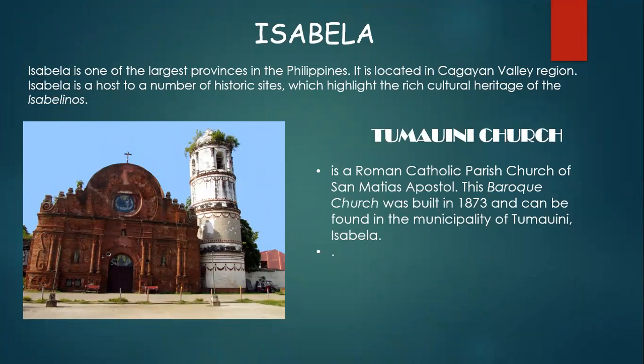In Isabela, as one of the largest provinces in the Philippines, we can find the Tumauini Church. Tumauini Church is a Roman Catholic parish church of San Matthias Apostol. This Baroque church was built in 1873 and can be found in the municipality of Tumauini, Isabela. The structure was built entirely of red bricks and done in the style of late Baroque or early Rococo. It has a four-story bell tower that looks like a wedding cake and is considered the most artistic brick structure in the country.